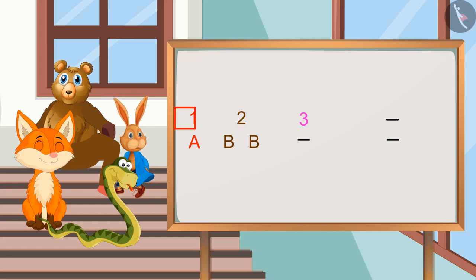Hmm, first we have the number 1, then alphabet A for once. Then we have number 2 and alphabet B is written twice.